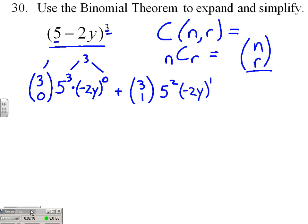And we continue on that, so our following term would be C(3,2), decrease our fives to 5¹, increase our negative 2y's to (-2y)². Notice again our exponents still add up to our 3.